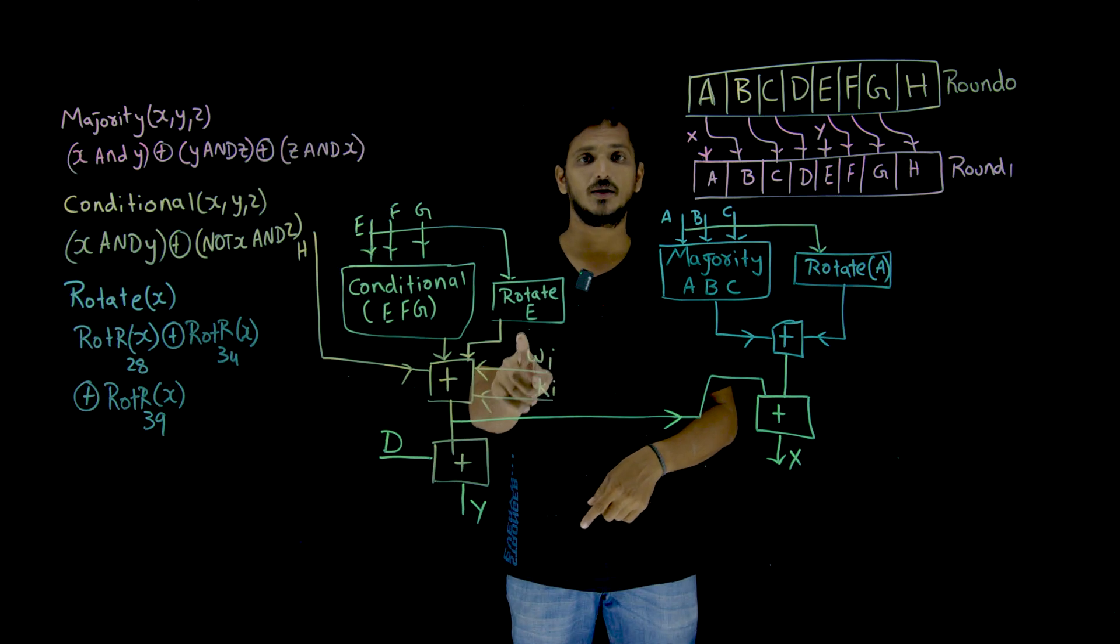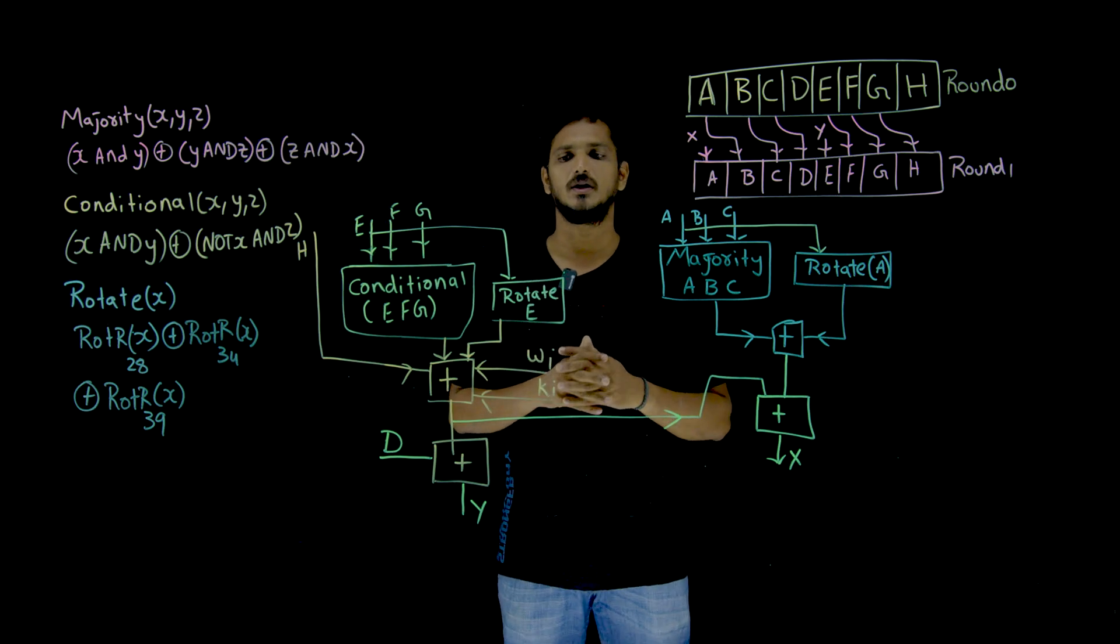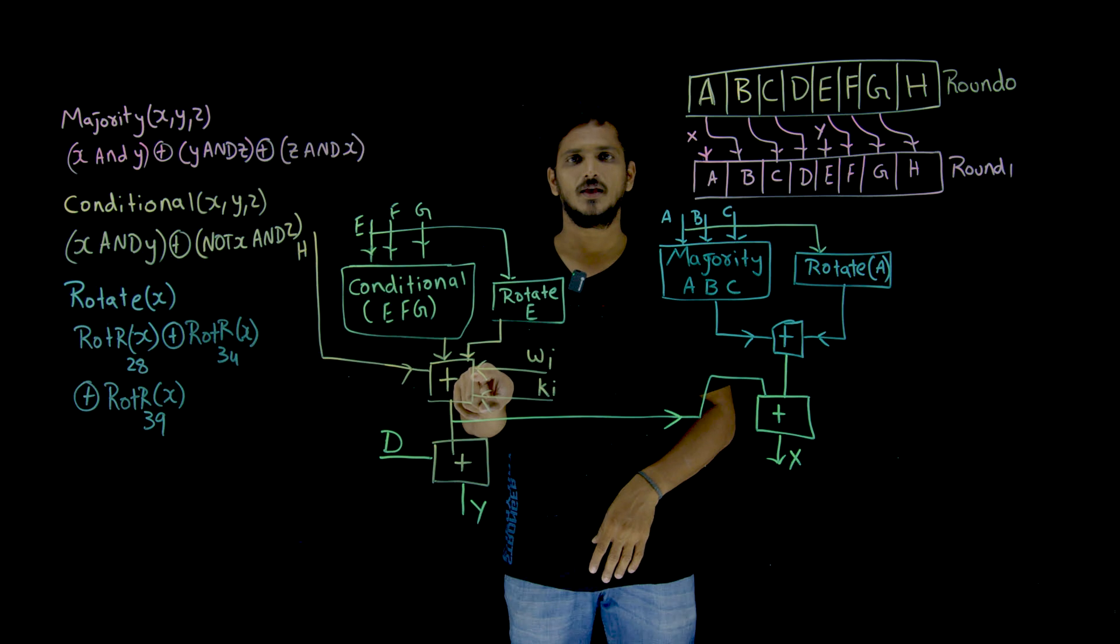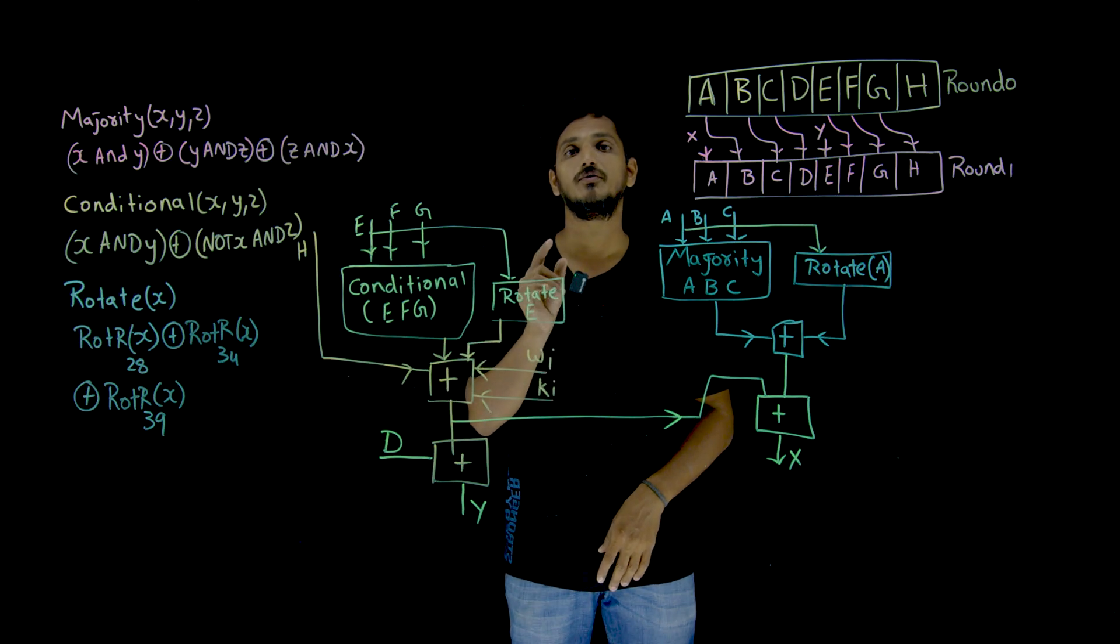These are WI, W0 is 64 bits, K0 is 64 bits. These five inputs are going to be added. Each one is 64 bits. That is why all are added. This is addition modulo 2 power 64.